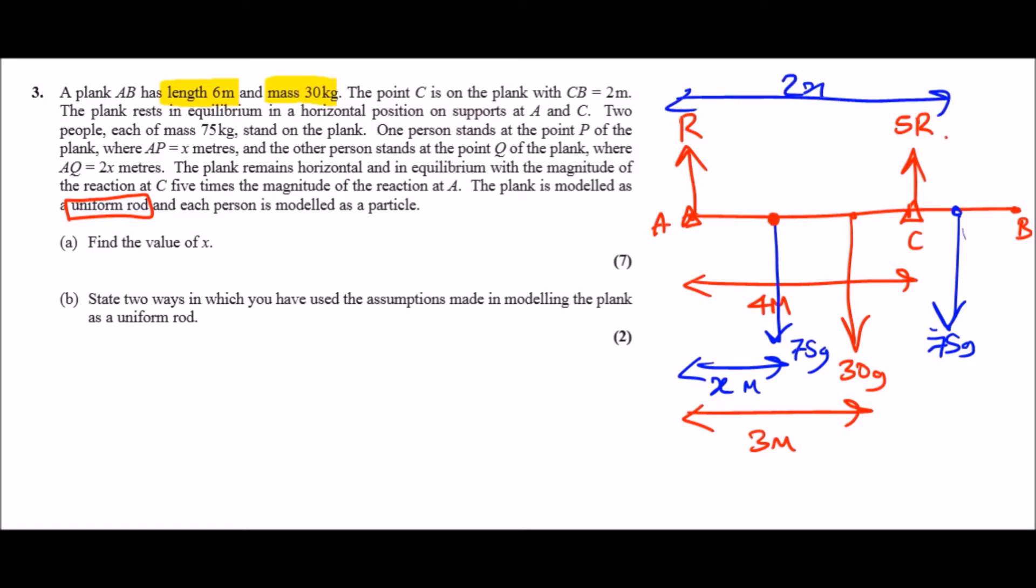And now we can just resolve vertically. So resolving upwards we can say that we've got R plus 5R which is 6R. And now resolving downwards you've got 75 plus 75 plus 30 which is 180g. This means that R must be equal to 180 divided by 6, you should get 30g. So that's one bit done, now the easy bit.